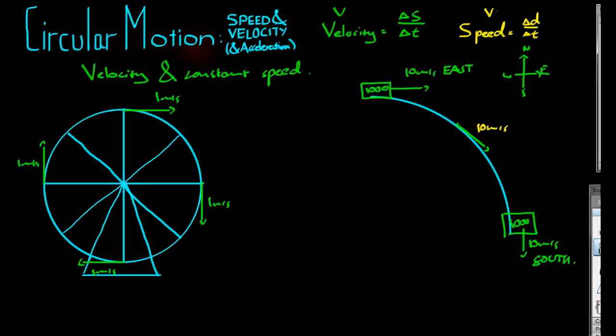Let's figure out the acceleration for this turn. We know that acceleration is ΔV on ΔT. And of course this ΔV is a velocity because acceleration is also a vector. So we want to figure out the change in the velocity. So VF, the final velocity, is equal to 0 meters a second east and 10 meters a second south. And the initial velocity is equal to 10 meters a second east and 0 meters a second south.